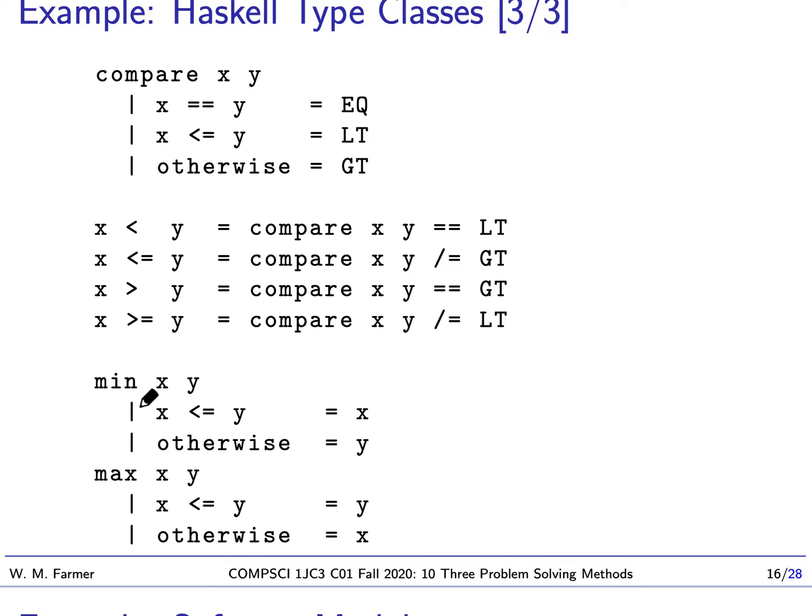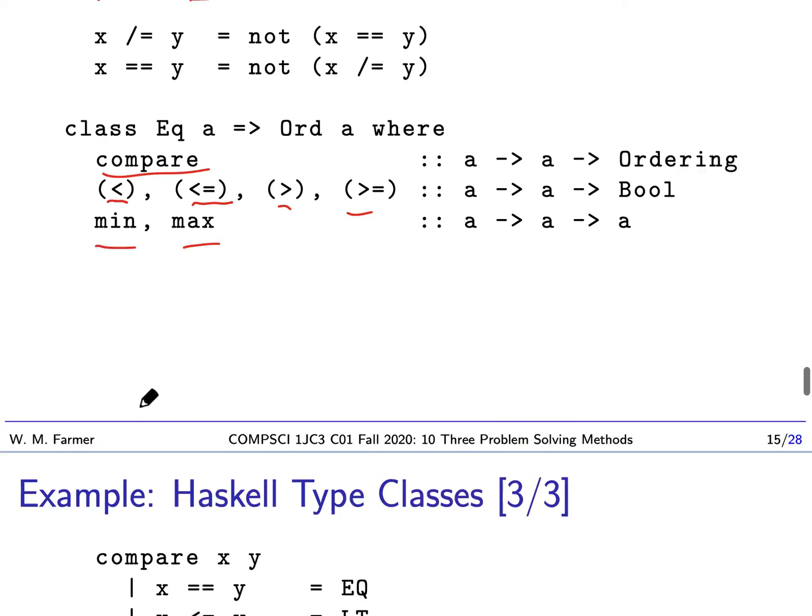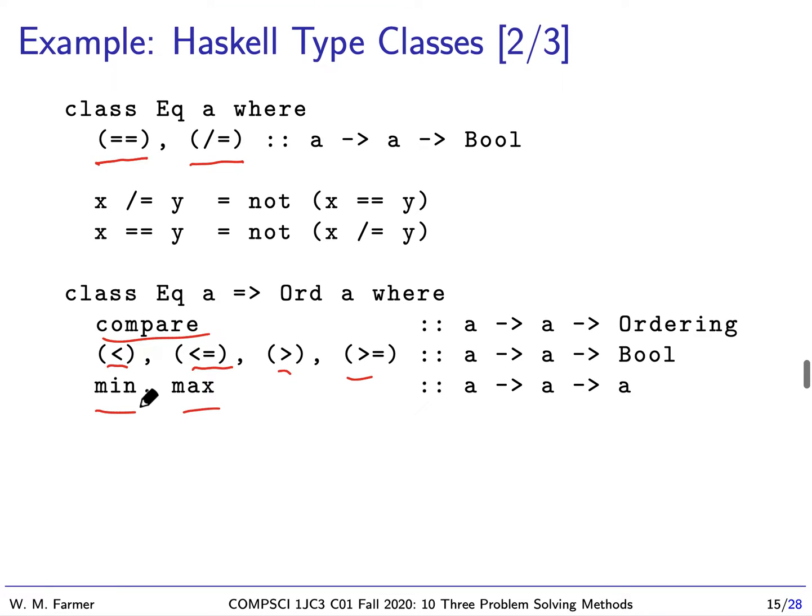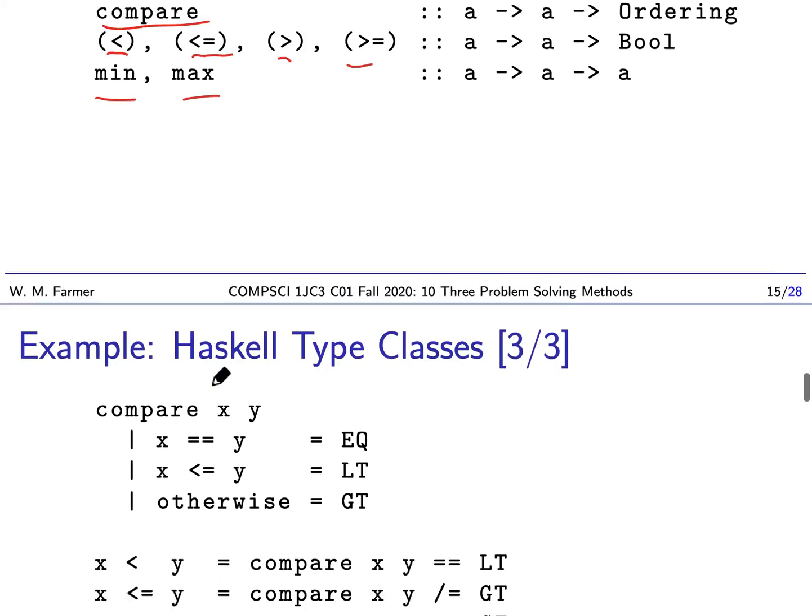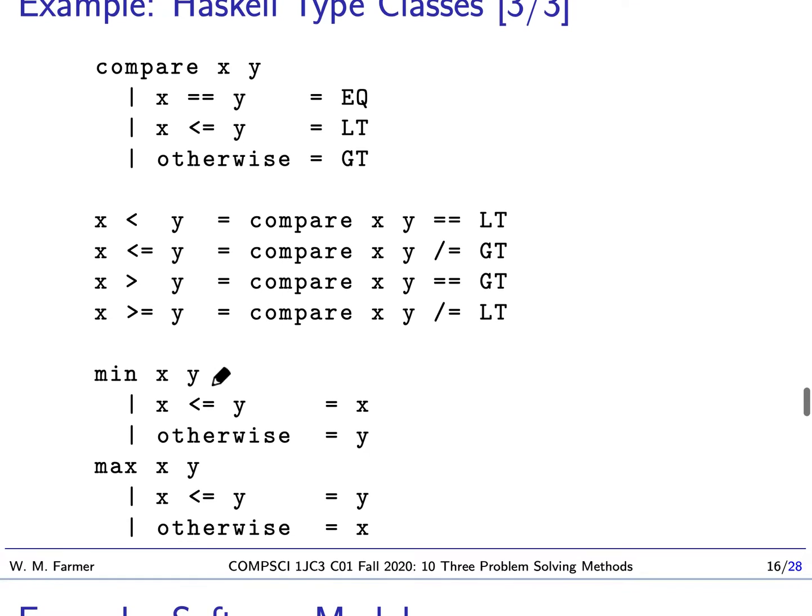We can have various instances. What the instance needs to do is say we have a type, and in this type we need to say what double equals is, what not equals is, what compare is, and all these are, and what min and max are.